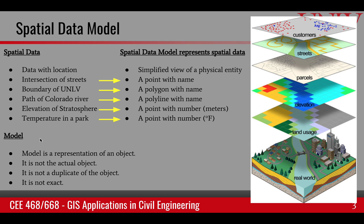We should also look at what a model is. A model is a representation of a real object — it is not the actual object, not a duplicate, and it is never exact. It has its limitations. So a spatial data model is a representation of spatial data — a simplified view of the physical entity we are interested in.